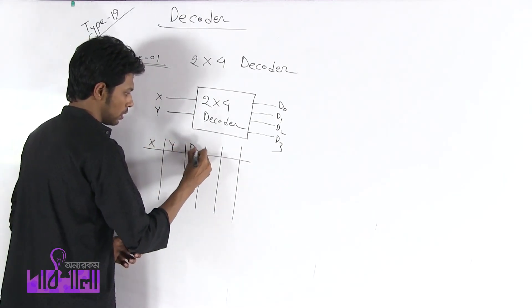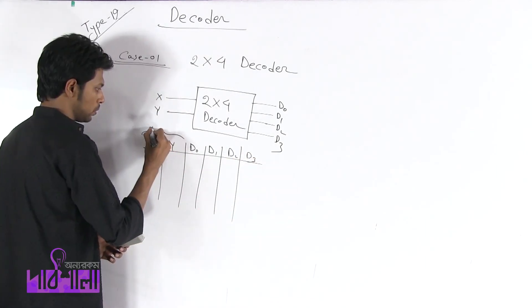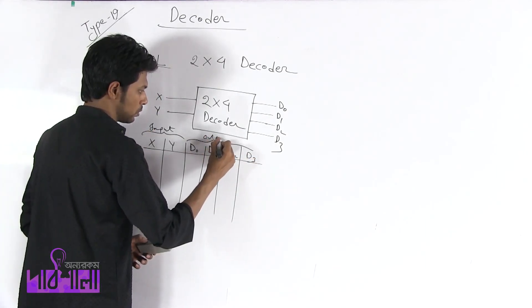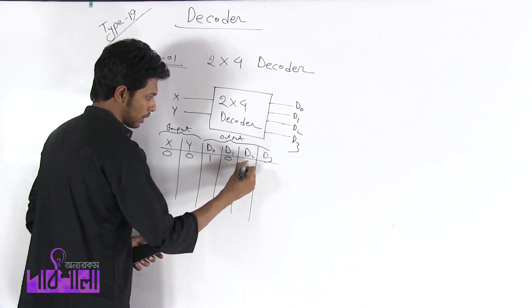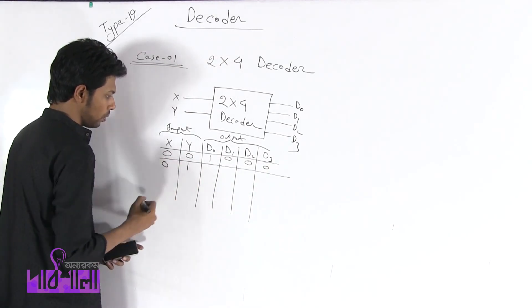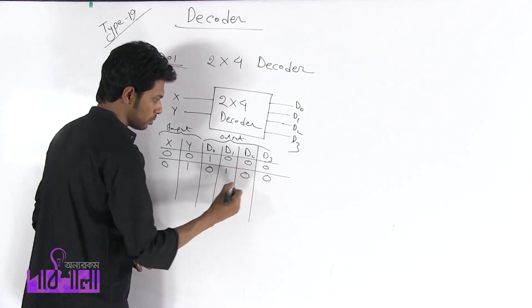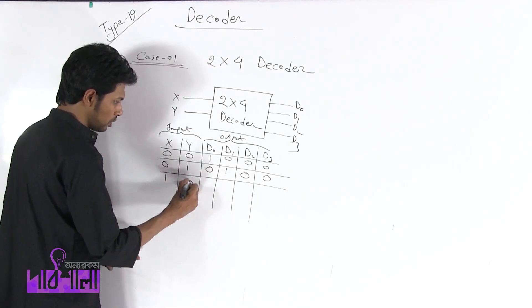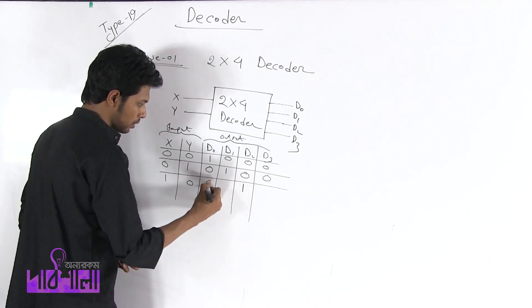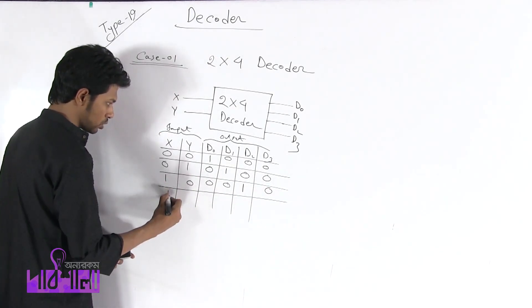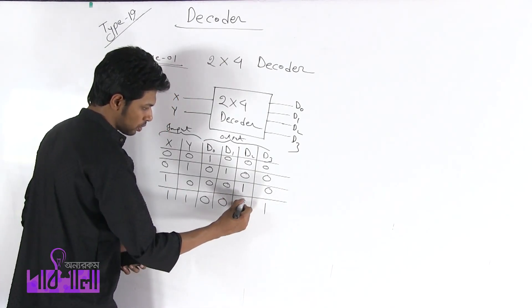The truth table columns are: X, Y, D0, D1, D2, D3. The input X, Y equal to 0, 0 gives output D0=1 and all others 0. Then if we have X, Y = 1, 1, then D3 is equal to 1, and all other outputs are equal to 0.